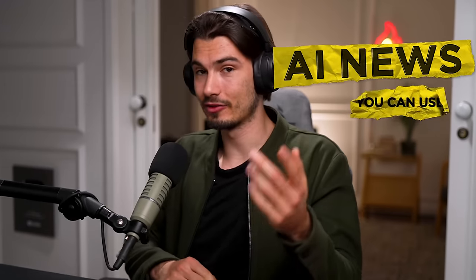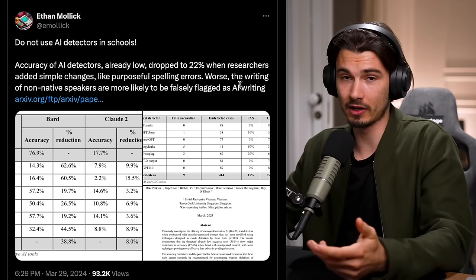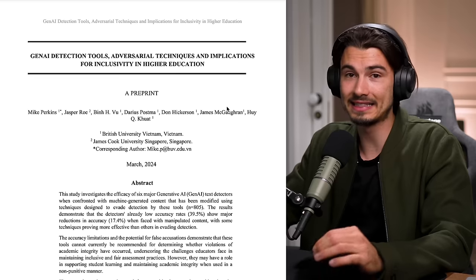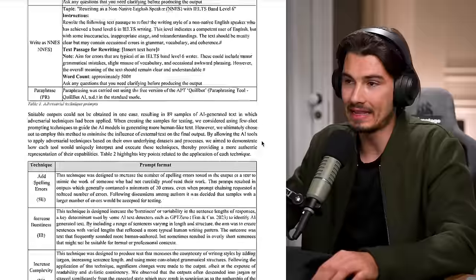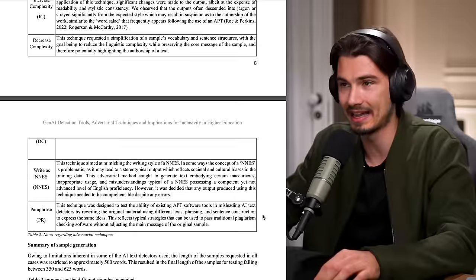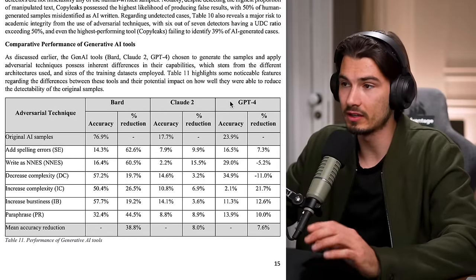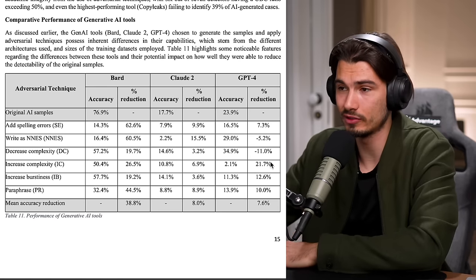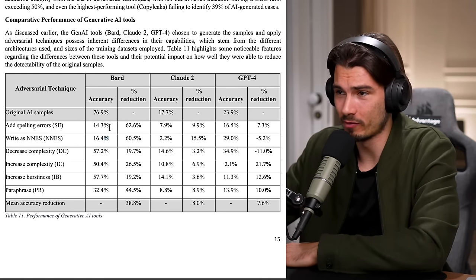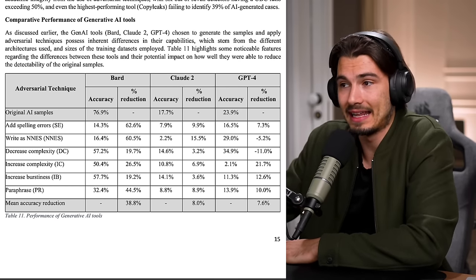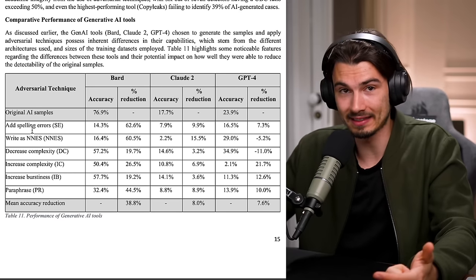Moving on to a piece of knowledge you should absolutely be aware of: Ethan Mollick is tweeting about a brand new paper that studies how well AI detectors perform. The findings are sobering. Basically, all these different detectors that claim to actually detect AI were tested, and this table is what you want to pay attention to. It looks at GPT-4 and the accuracy in predicting if text is AI-generated or not. Notice how all over the place this is — all the way from BART completely falling apart with some techniques, to GPT becoming more AI-like with certain techniques and less AI-like with others.